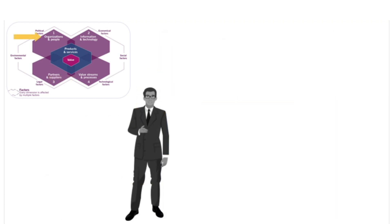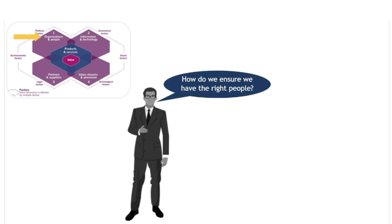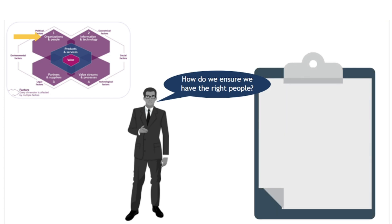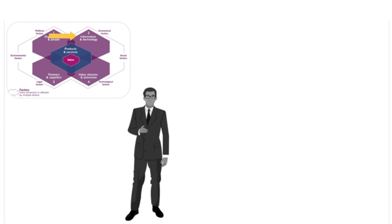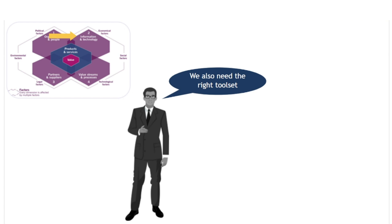But a practice will only be as good as the people involved in it. Having the right people, in the right place, doing the right things, involves thinking about things like training and recruitment, team structures and individual roles and responsibilities. The available toolset will either serve to enable or constrain the practice. For example, an organisation can choose to conduct incident management using spreadsheets and email, but this will limit the benefits they are able to achieve.